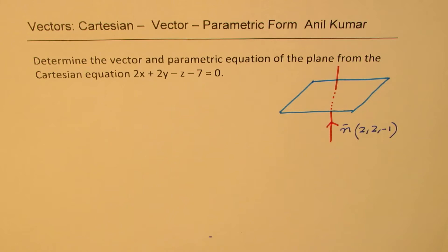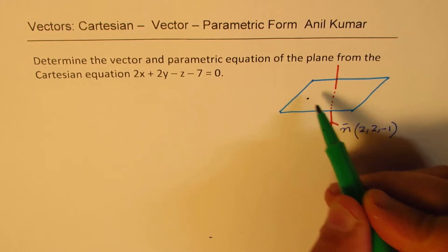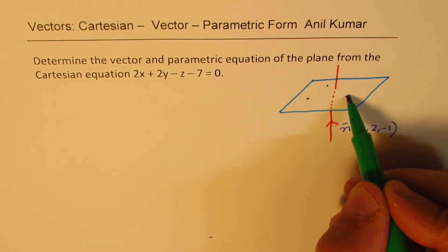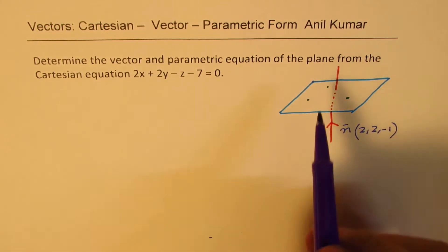Now, when we talk about parametric and vector equations, they define a plane in terms of lines or points on the plane. That is a major difference. So, how do you get equation from Cartesian to vectors?